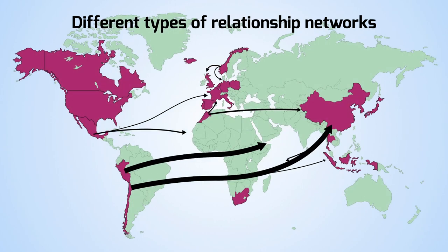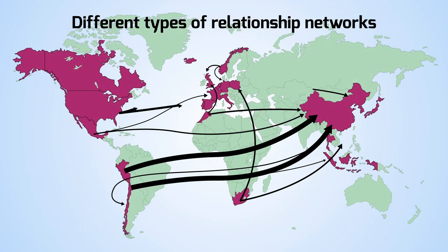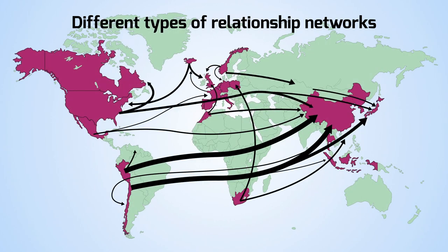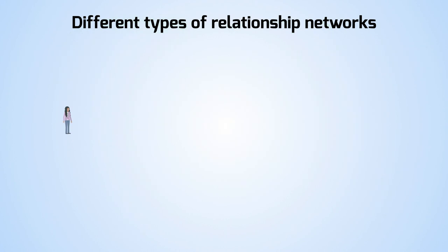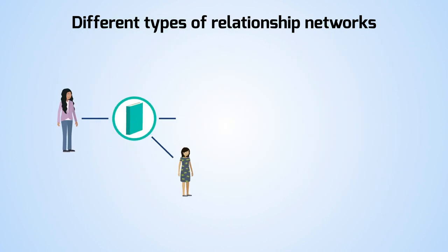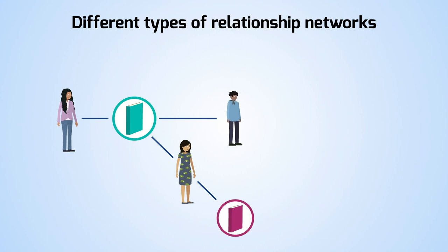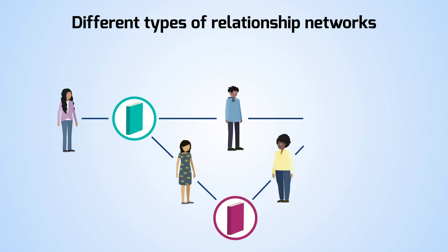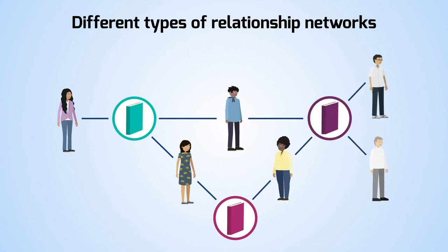There are different types of relationship networks. For example, import-export trade between countries can be represented by a directed, one-mode network. Whereas this undirected, unweighted, two-mode network represents individuals and the books they like.